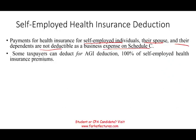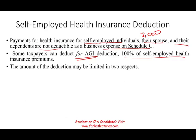However, some taxpayers can deduct 100% of their self-employed health insurance premium for AGI — for adjusted gross income. For example, if you paid $10,000 in premiums: although you cannot deduct it as a business expense on Schedule C, you can deduct it for AGI, which gives you a similar effect. However, this deduction can be limited in two respects — you cannot simply pay any amount and take the full deduction.